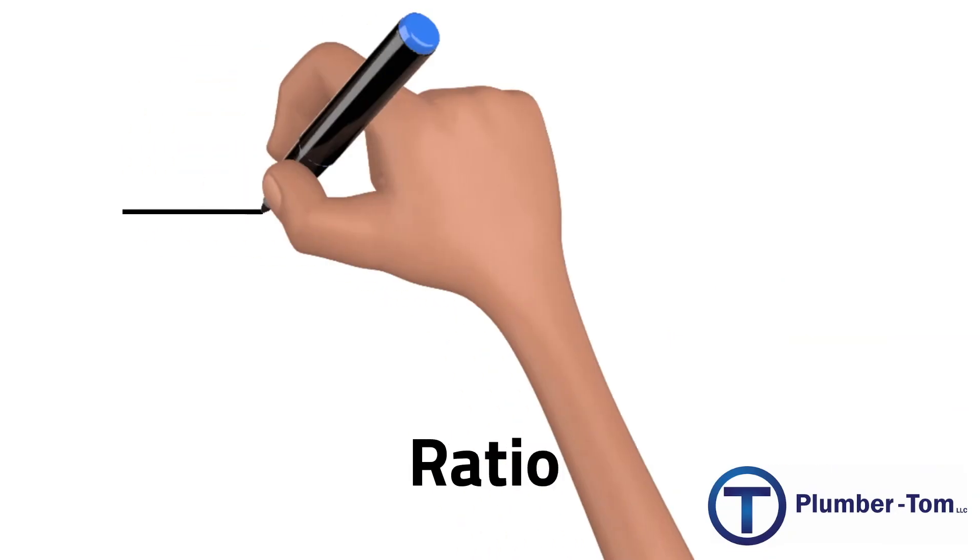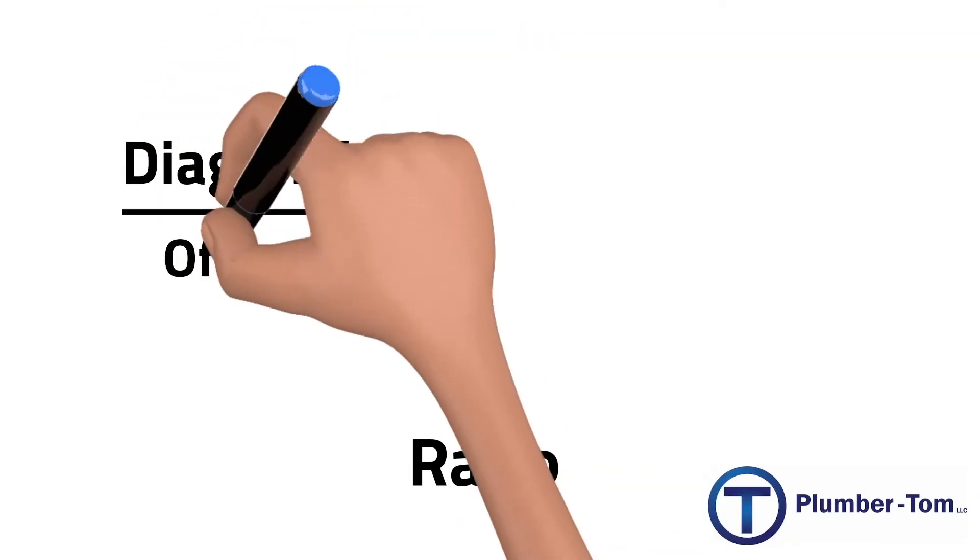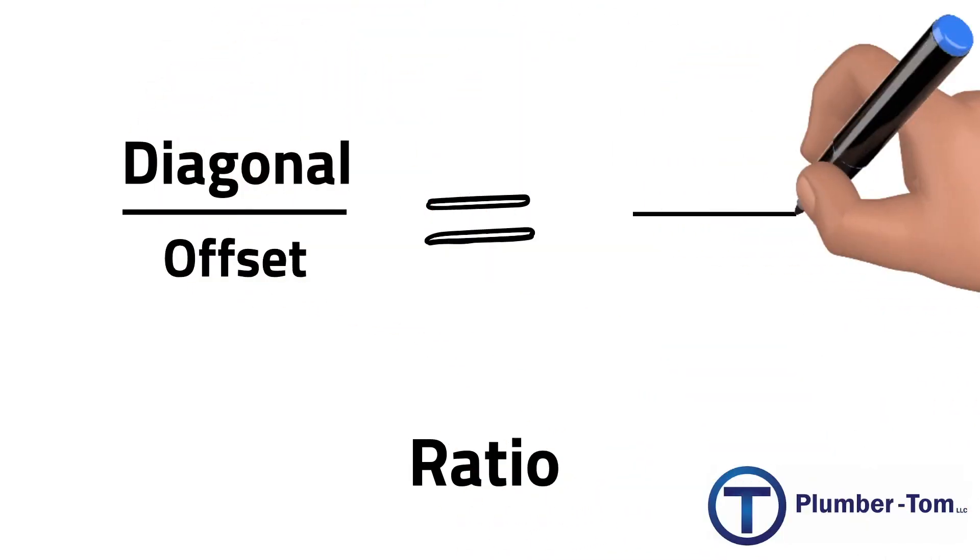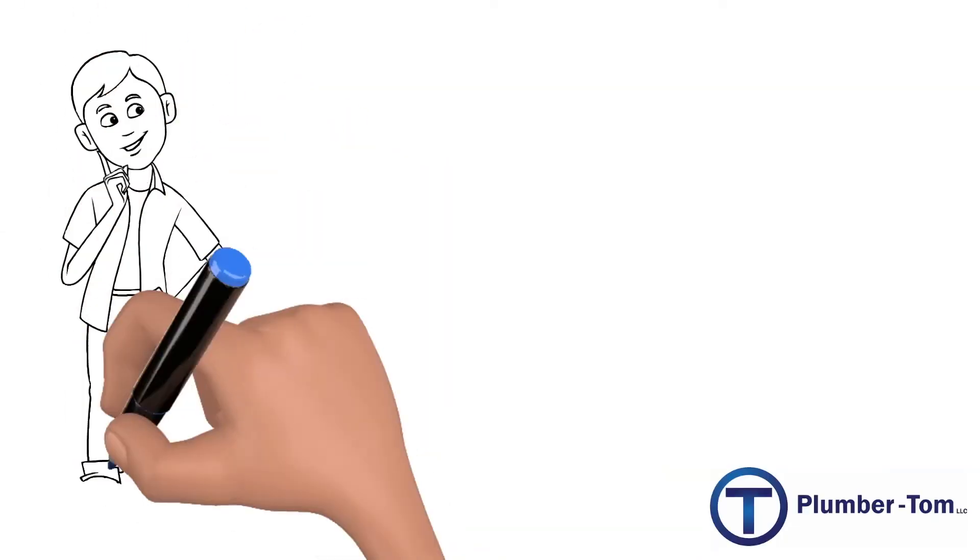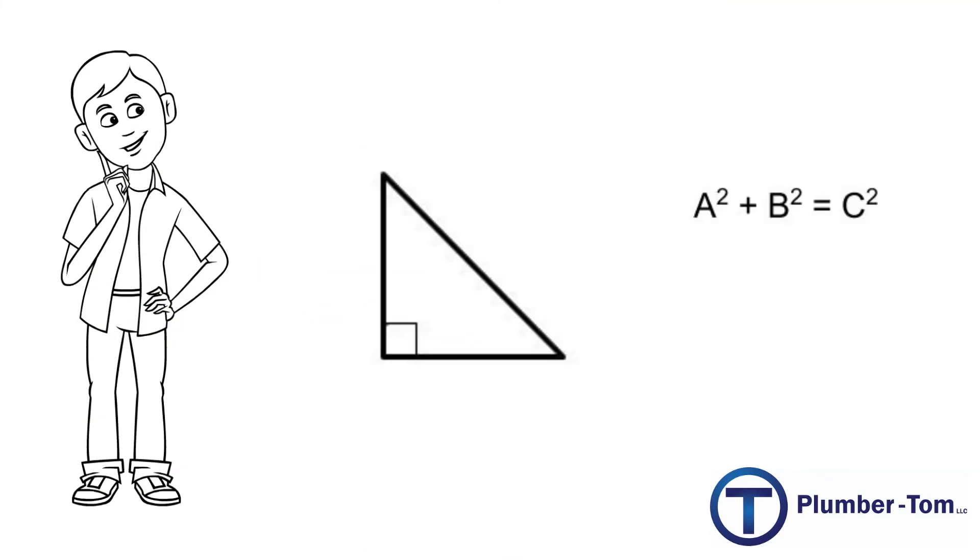To understand this, let's examine a ratio of the diagonal over the offset. For our triangle this was 1.414 over 1. We can test our ratio on another triangle. This time let's have our shorter sides being equal at 4 units.